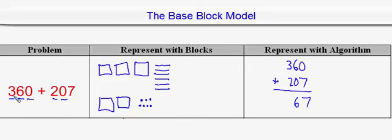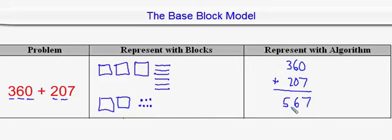And then finally we had the 3 flats here and the 2 flats here, which add up to be 1, 2, 3, 4, 5. So you have 5 here. Notice there was no regrouping over here, so there was no regrouping necessary: 7 plus 0 gave us 7, 6 plus 0 is 6, and 3 plus 2 turns out to be 5, so the answer is 567.